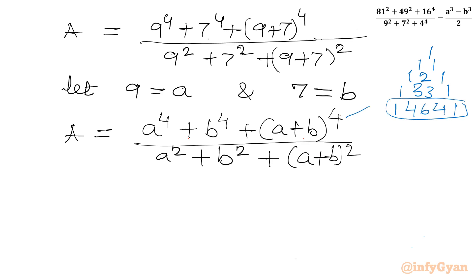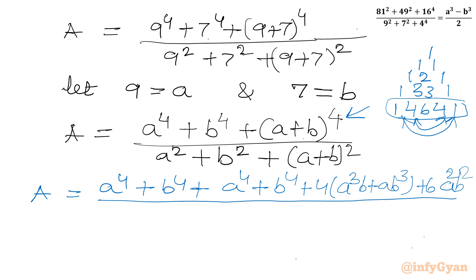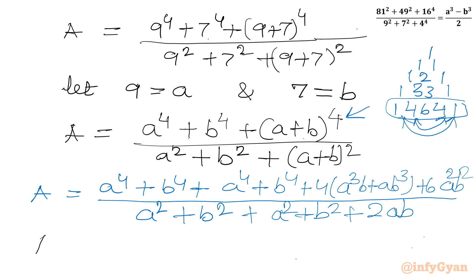So we can write A equal to a⁴ + b⁴. Now I will expand (a+b)⁴. Expanding gives a⁴ + b⁴ plus terms with 4a³b, 4ab³, and 6a²b².